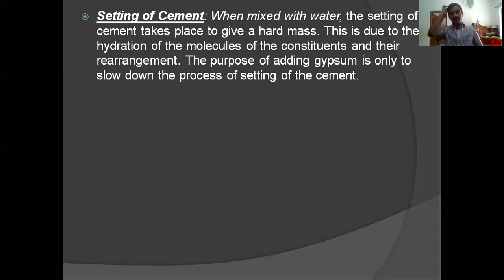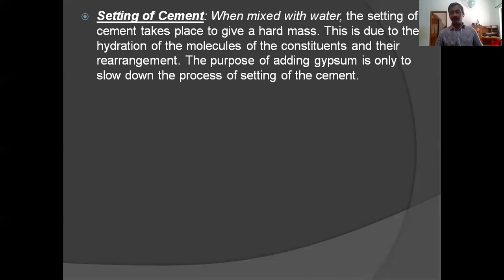Setting of cement: when cement is mixed with water, setting takes place to give a hard mass. This is due to the hydration of the molecules of the constituents and their rearrangement — oxides of silica, aluminium and calcium are all present. The purpose of adding gypsum is only to slow down the process of setting of the cement.